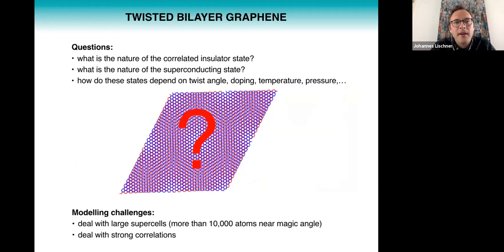So the questions that we'd like to answer are: what is the nature of the correlated insulator states? What is the nature of the superconducting state? And how do these states depend on things you can control in experiments like twist angle, doping, temperature, pressure? But of course answering these questions is quite challenging from a modeling perspective. One challenge is that you have to deal with very large supercells. Near the magic angle there's more than 10,000 carbon atoms in the moiré unit cell. And in addition to that you also have to deal with strong electron correlations, and as most of you know there's no standard off-the-shelf method to deal with such a system.